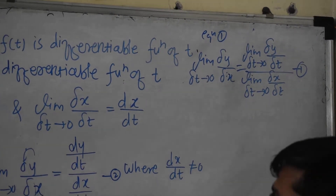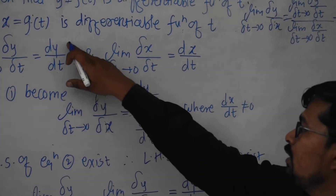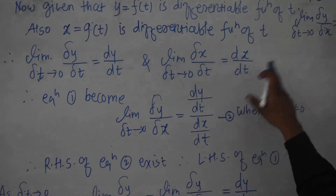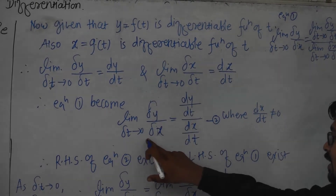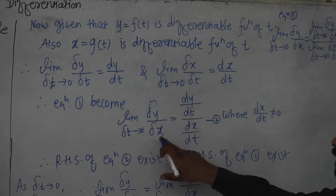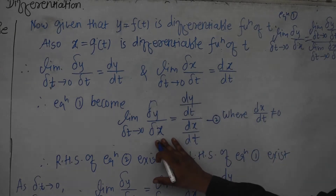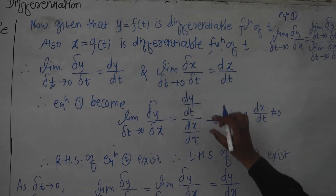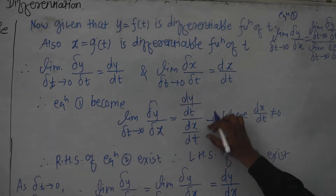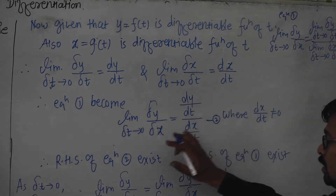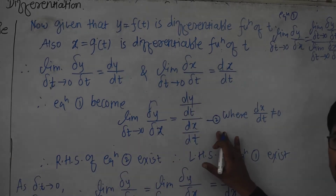By substituting these values dy/dt and dx/dt, the expression becomes: limit as delta t → 0 of (delta y / delta x) = (dy/dt) / (dx/dt). Since both dy/dt and dx/dt are differentiable functions, their division is also a differentiable function. Therefore, the right-hand side exists and is finite.